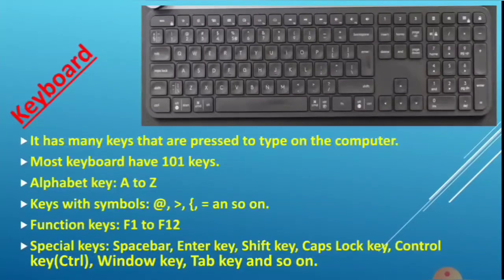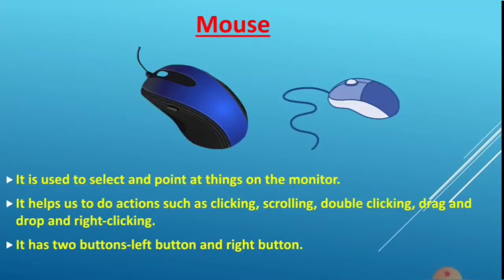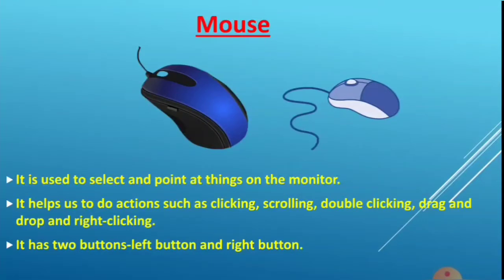Next is the mouse. Using the mouse we can select and point to things on the monitor. The mouse also helps us do clicking, scrolling, double clicking, drag and drop, and right click on the monitor screen. Most mice have two buttons: the left button and the right button.